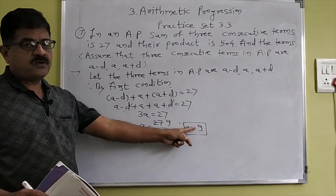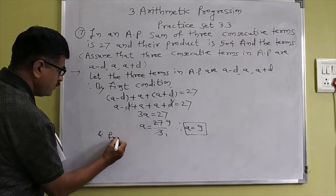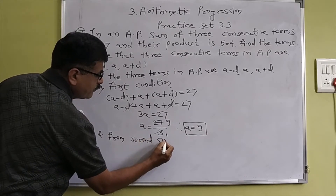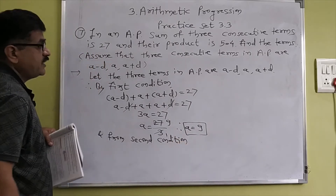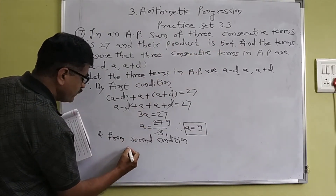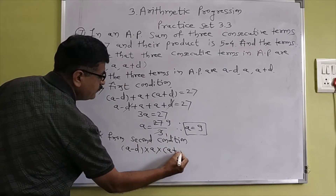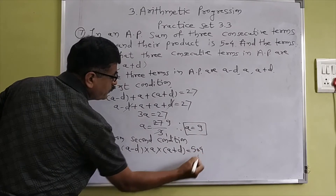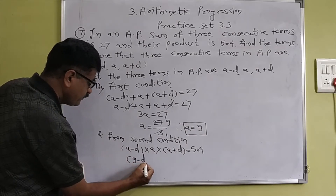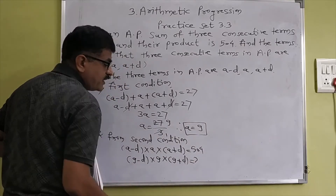We get the value of A from the first condition. Now, from the second condition: their product is 504. That is, (A minus D) into A into (A plus D) is equal to 504. Now put the value of A as 9: (9 minus D) into 9 into (9 plus D) equals 504.